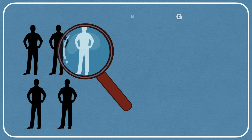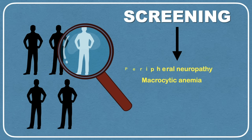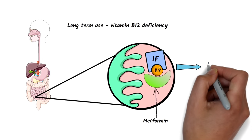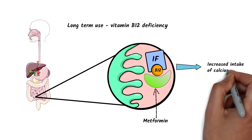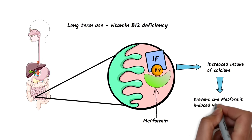Periodic screening of vitamin B12 deficiency should be considered, especially in patients with peripheral neuropathy or macrocytic anemia. Increased intake of calcium may prevent metformin-induced vitamin B12 malabsorption.